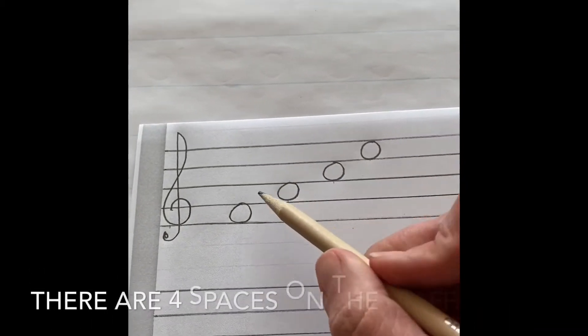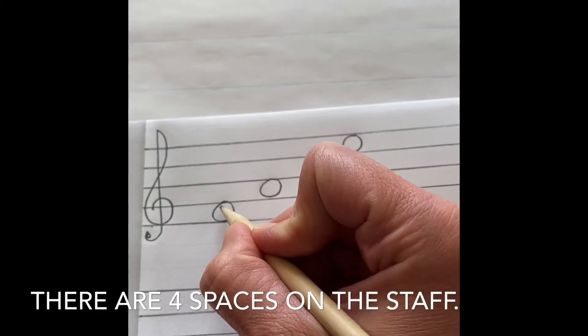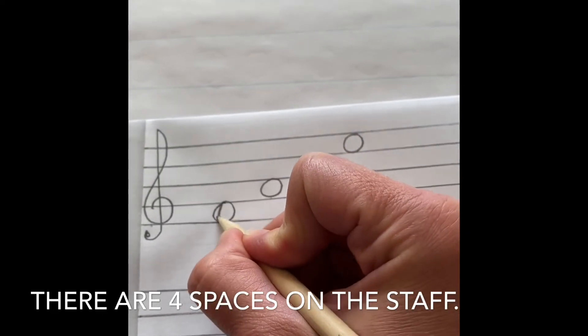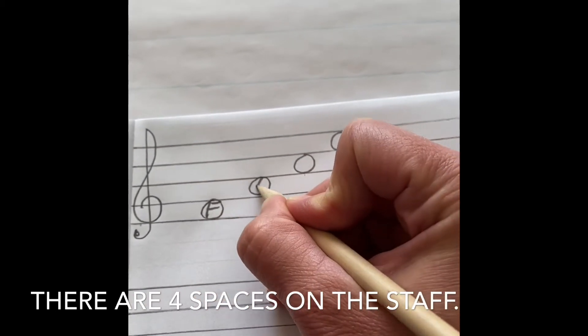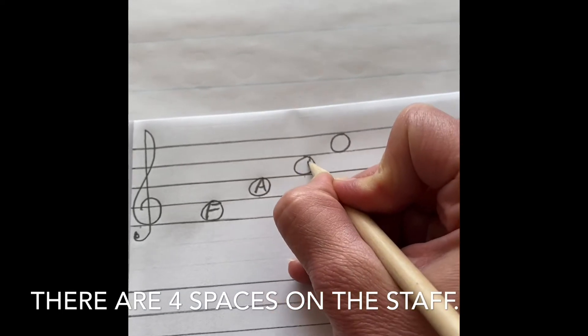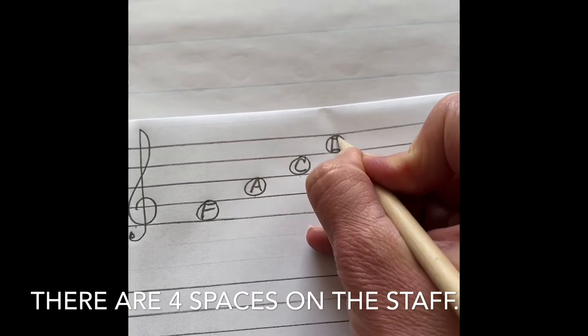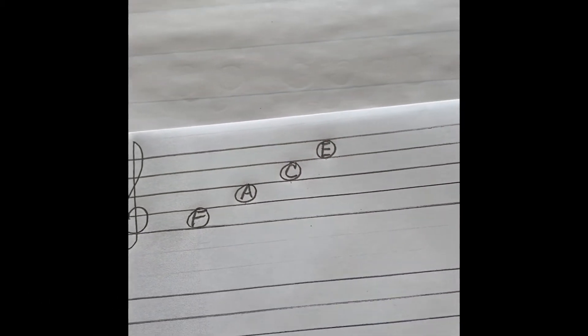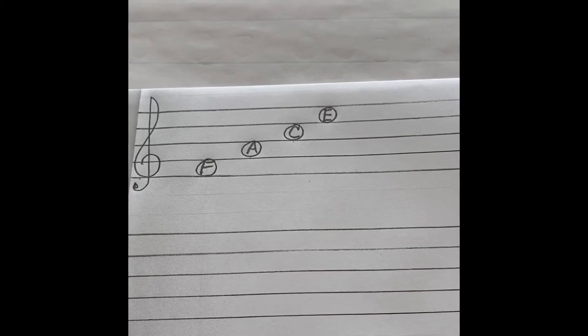As you can see, there's four spaces on the staff. This first note in this first space is an F. On the second space, the note is an A. On the third space, it's a C. And on the final fourth space is an E. If you have problems remembering your treble clef space notes, remember it spells FACE.